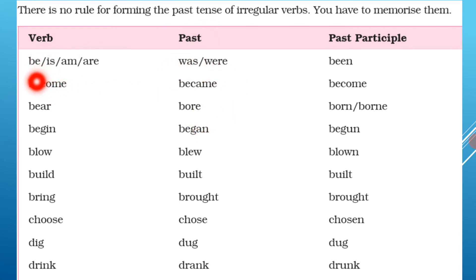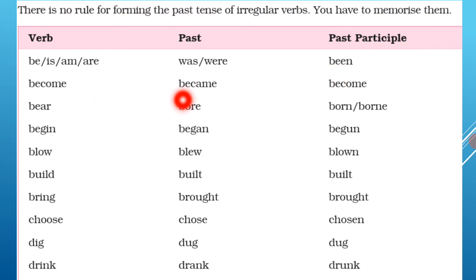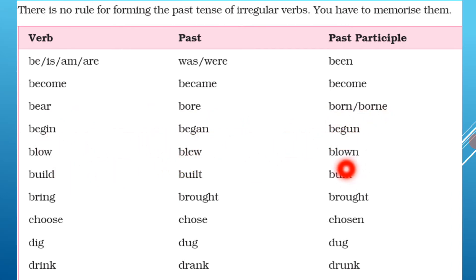If you learn irregular verbs in order, you can learn them. Observe them in the same order. For example: 'become', 'became', 'become'; 'bear', 'bore', 'borne'; 'begin', 'began', 'begun'; 'blow', 'blew', 'blown'. So these verbs you have to learn — there is no way out, there is no shortcut. You have to practice and learn them.